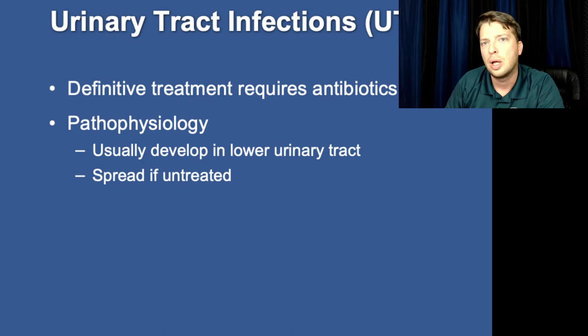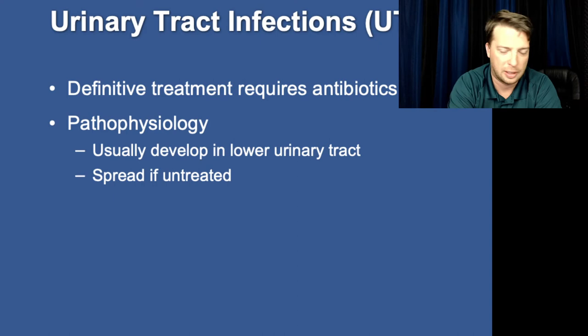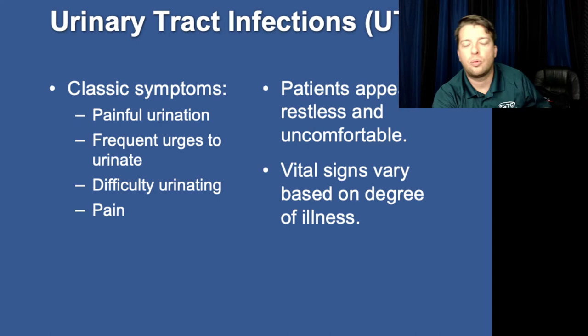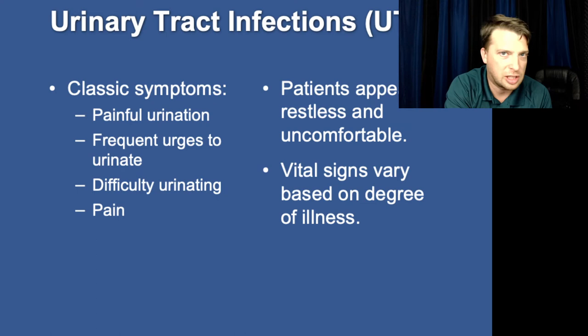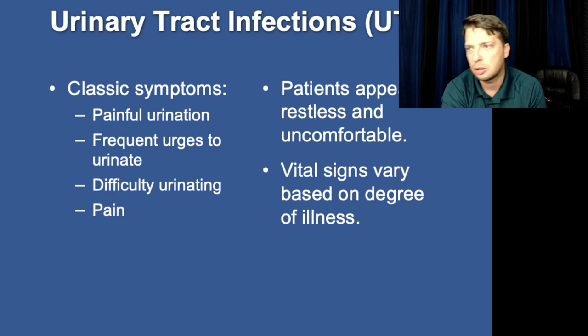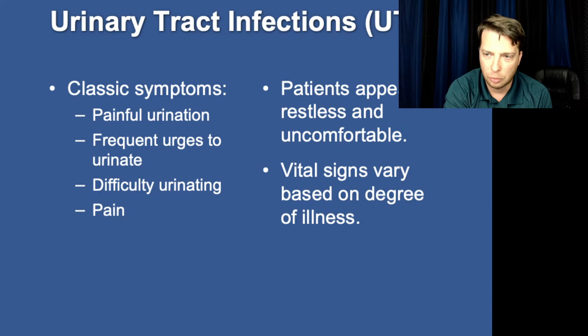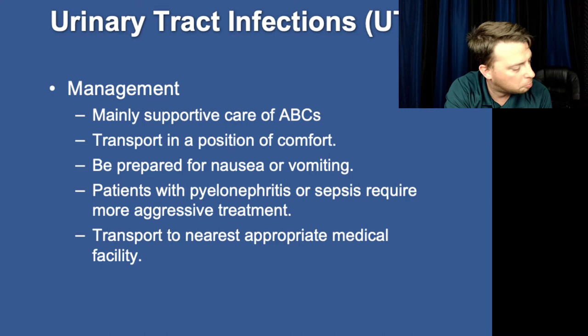While in general women have a higher risk, it is important to note that once incontinence is an issue and when your male patients are having to wear depends or having to use catheters, the risk of UTI is basically the same between male and female populations. A big concern with UTI is they will spread to other organ systems and throughout the body — they are a very common cause of sepsis. Classic early symptoms include painful urination, frequency, difficulty, or just pain in general in the urinary tract. Later symptoms include restlessness, discomfort, and vital sign changes.